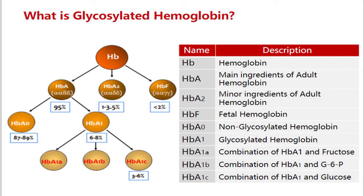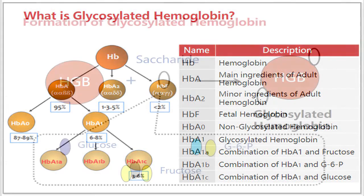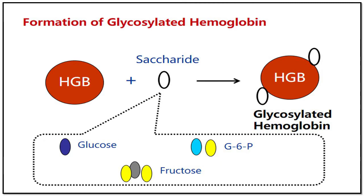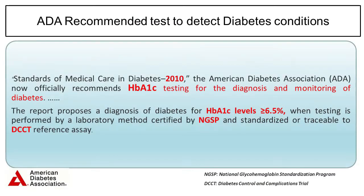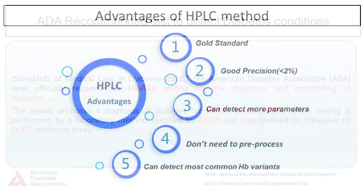In infants, the hemoglobin type is HbF. Glycohemoglobin is formed when a ketoamine reaction occurs between glucose and the N-terminal amino acid of the beta chain of hemoglobin. The amount of glycohemoglobin generated is proportional to the mean blood glucose during the eight to ten weeks before the test. Therefore, the glycohemoglobin level is a useful indicator of long-term blood glucose control, and the American Diabetes Association now officially recommends HbA1c testing for the diagnosis and monitoring of diabetes.